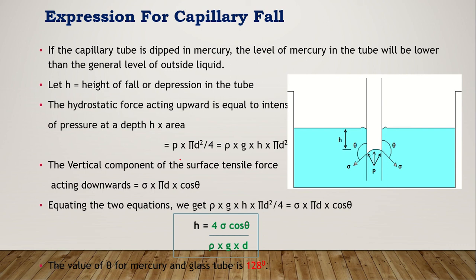Surface tension force = σ × π × d × cosθ (same magnitude as before, but acting downward). Hydrostatic force = p × A = ρgh × (π/4)d², acting upward. Equating both forces, the pi/4 and d terms cancel to give the same formula: h = 4σcosθ / (ρgd). For capillary rise, h is positive; for capillary fall, h is negative. For glass and mercury, theta is generally 128 degrees.